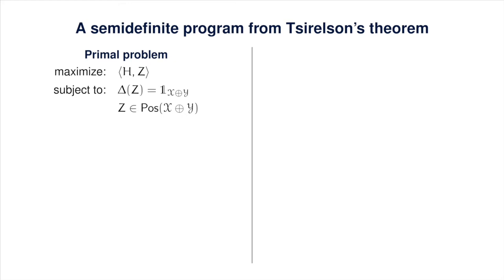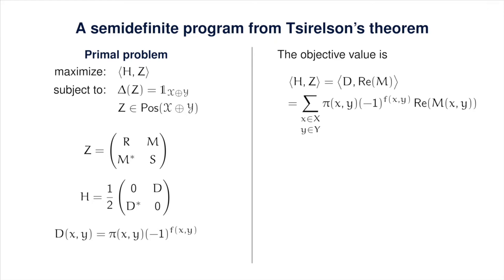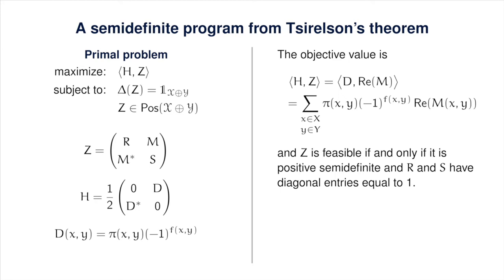Looking at the primal problem, the objective value equals the inner product of D with the real part of M—meaning its entry-wise real part. This is because the inner product of H with Z equals the average of the inner product of D with M and the inner product of D* with M*, which equals the inner product of D with the average of M and its entry-wise complex conjugate, given that D is real. Plugging in the definition of D yields this expression. Z is feasible if and only if it is positive semi-definite and R and S have diagonal entries equal to 1.